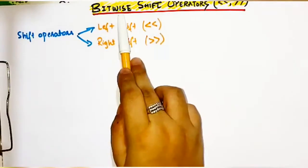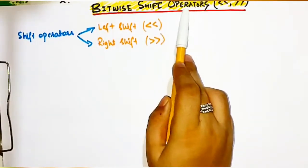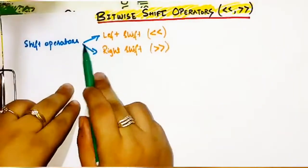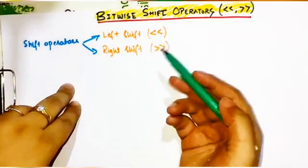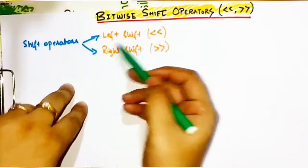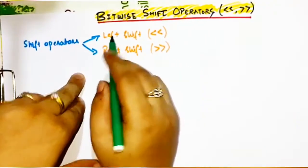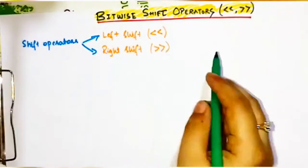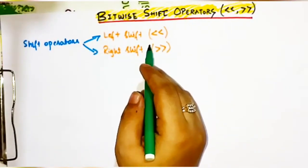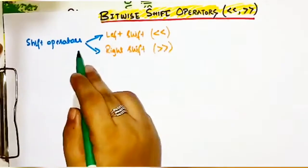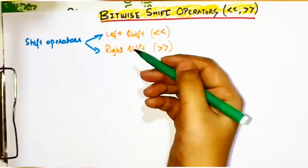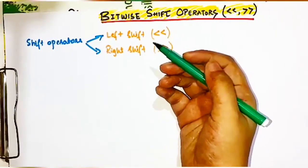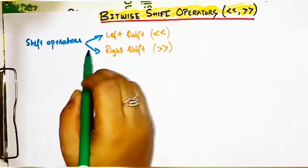Why do we call it a bitwise shift operator? As the name makes clear, we have to shift the bits to the left or right side. In any binary number, the bits — zeros and ones — when we shift them to the left, the resulting number becomes our answer. Let's understand this with an example.